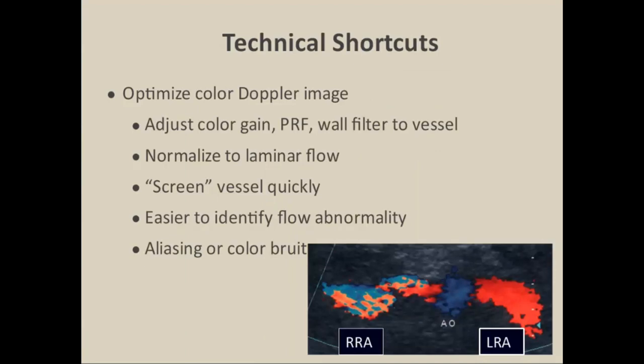One important shortcut to performing a complete renal duplex examination efficiently is by optimizing the color Doppler. In this example, we see a color change — aliasing at the site of stenosis in the proximal renal artery. That draws your attention quickly so you know where to place the sample volume to get the highest peak systolic velocity to characterize the lesion. We adjust the color gain, pulse repetition frequency, and wall filter normalized to laminar flow. This lets us screen the vessel quickly and identify flow abnormalities — aliasing for high velocities, and bruit artifact for high-velocity vascular disturbance.